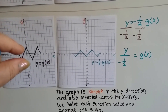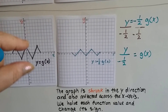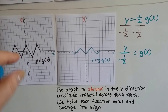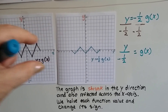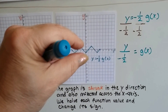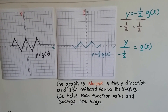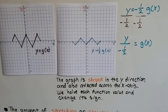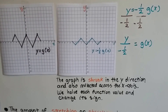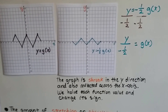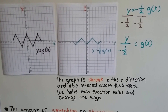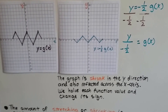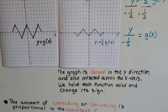The whole thing squished towards the horizontal axis — it went from being this wide to only being that wide. The graph is shrunk in the y direction and also reflected across the x-axis. We halve each function value and change its sign.